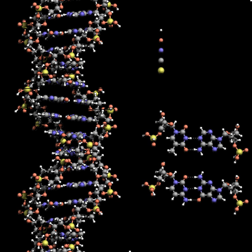On 28 February 1953, Crick interrupted patrons' lunchtime at the Eagle Pub in Cambridge to announce that he and Watson had 'discovered the secret of life.' Months earlier, in February 1953, Linus Pauling and Robert Corey proposed a model for nucleic acids containing three intertwined chains, with the phosphates near the axis and the bases on the outside. Experimental evidence supporting the Watson and Crick model was published in a series of five articles in the same issue of Nature.